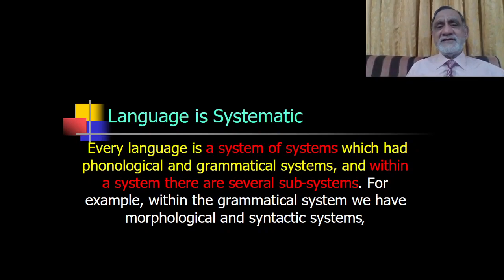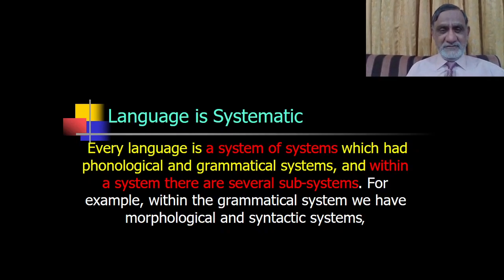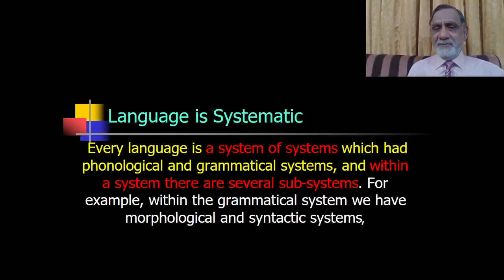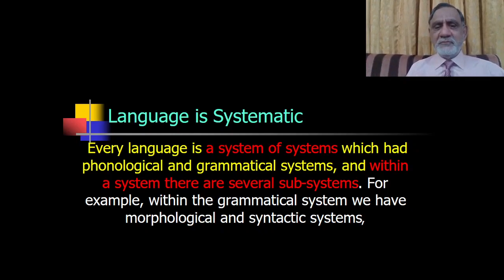Another characteristic is that language is systematic. Every language is a system of systems — it is not haphazard. Every language has phonological and grammatical systems, and within each system there are several subsystems. For example, within the grammatical system we have morphological and syntactic systems.